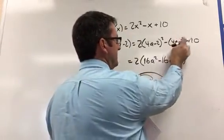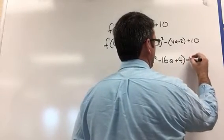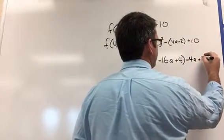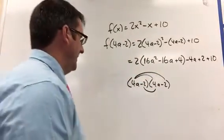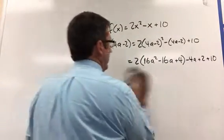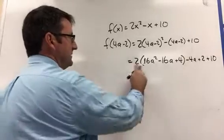And then let's distribute that negative sign. So we get negative minus 4a plus 2 plus 10. All right, now we can distribute that 2.